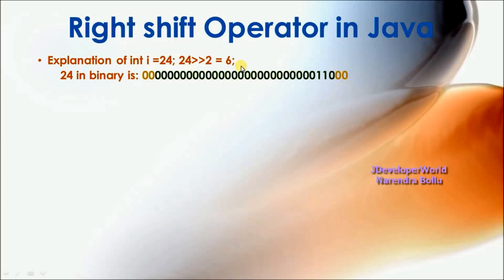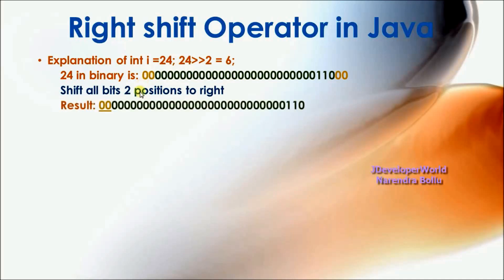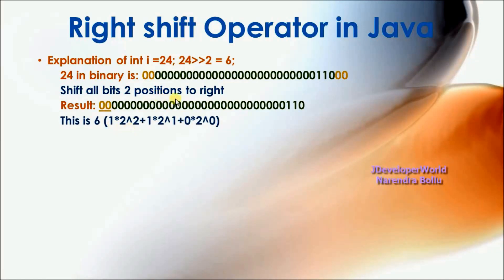Right shift operator in Java. I have an integer of 24 and I am going to shift 2 bits to the right side. 24 right shift 2, the result is 6. We will see how: 24 in binary is represented, and if I shift 2 bits towards the right side, it will shift those 2 bits and pad 2 zeros on the left side. After shifting all 2 positions to the right, the result is 6, which we can verify in binary format.